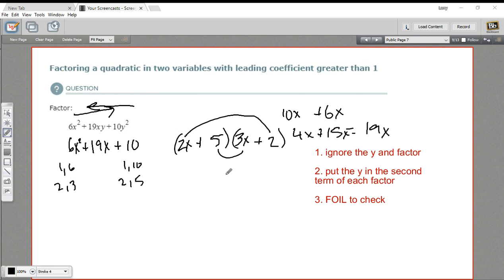So there is our factorization, ignoring the y's. And then we're just going to put the y's back in. So I had 2x plus 5. That's going to be 2x plus 5y. And 3x plus 2 is going to be 3x plus 2y.